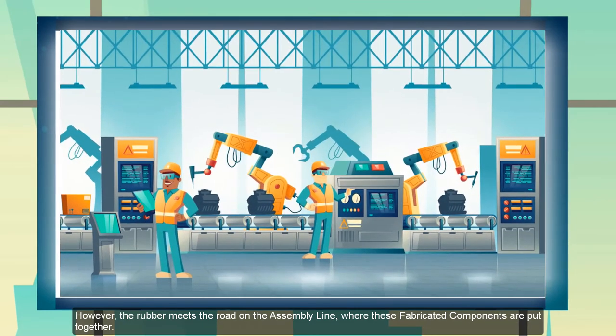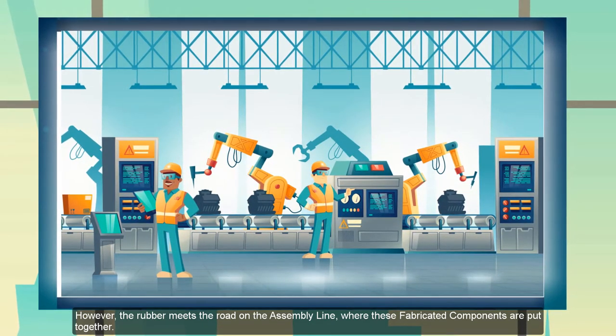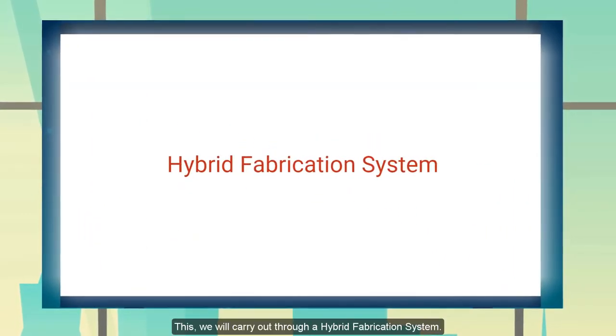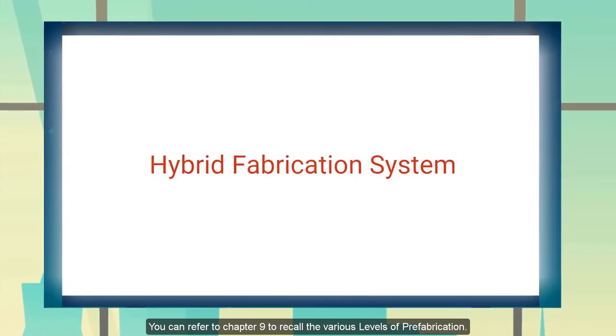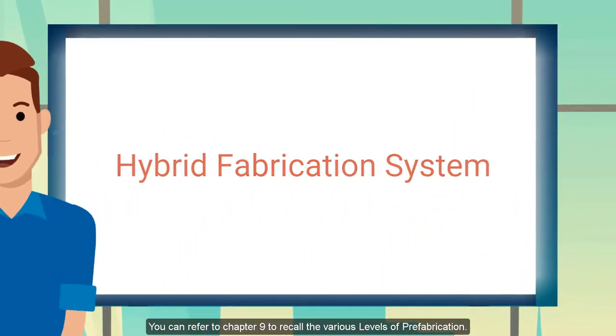But then the rubber meets the road on the assembly line when we begin to put these various components together. This will be carried out through a hybrid prefabrication system. You can refer to the ninth chapter of this course to learn more about the various levels of prefabrication.